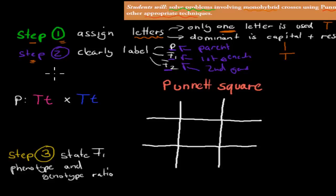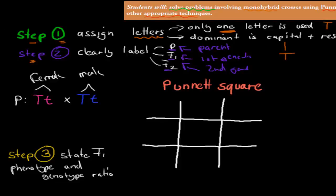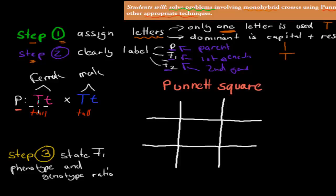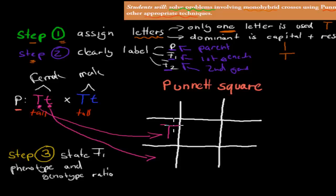For example, we're looking at height. We have the female and the male, and we write the genotypes. In this case, I've written uppercase T and lowercase t — which means it's heterozygous, a hybrid. The phenotype — the appearance — would be tall for both, because the dominant T is overshadowing the recessive t. So both parents are tall. We place their alleles into the Punnett square, separating them: capital T and lowercase t for the female along the top.